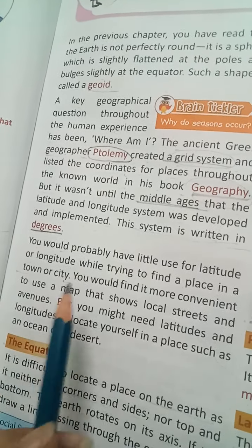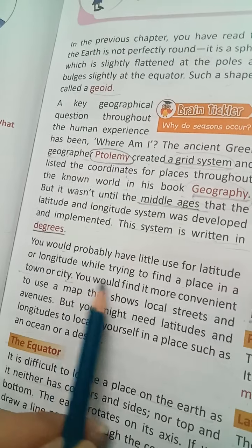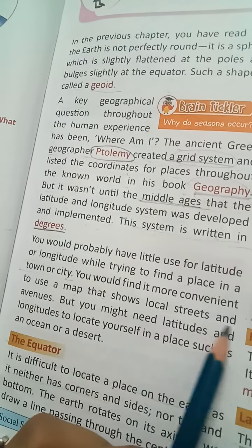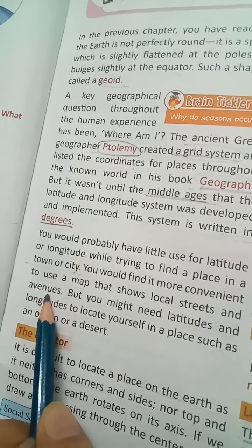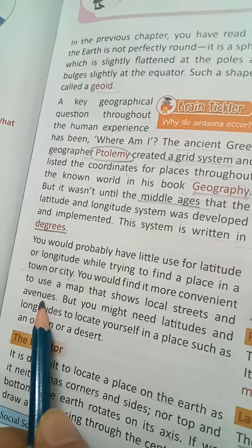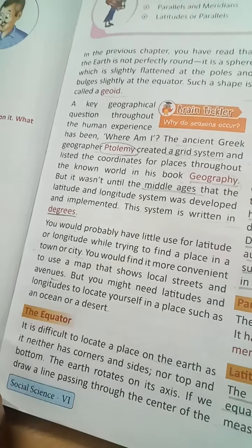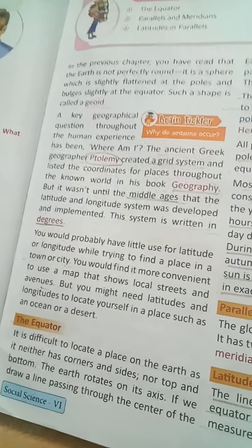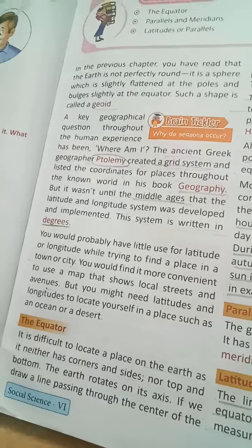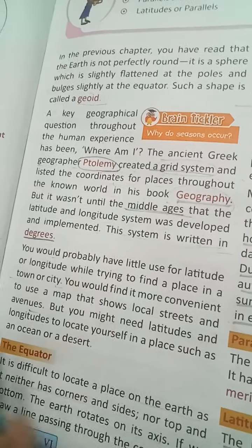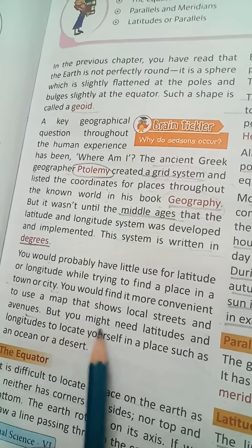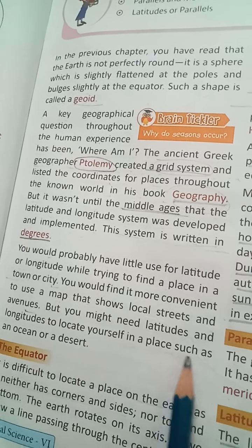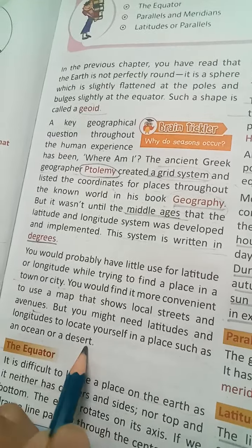You would find it more convenient to use a map. A map shows local streets and avenues. But you might need latitude and longitude to locate yourself in a place such as an ocean or a desert.